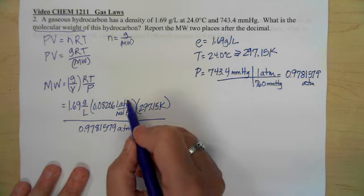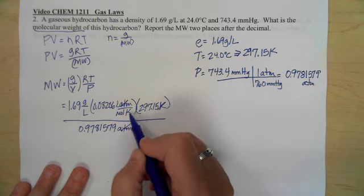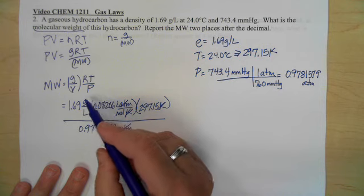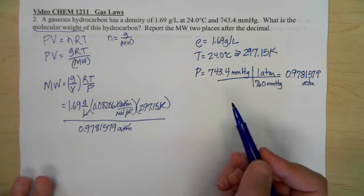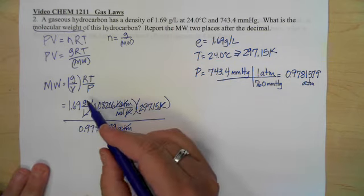I'm going to take a second to cancel my units. Atmospheres are going to cancel. K is going to cancel. Moles is not going to cancel. Grams is not going to cancel. Liters just cancels. So I am now left with units of grams per mole.